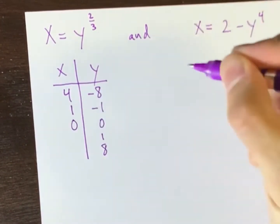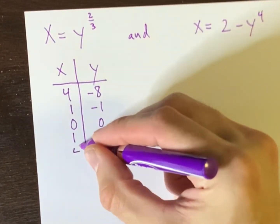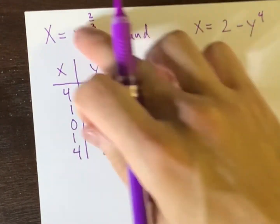Plug in zero, it's zero. Plug in one, one. Plug in eight, and you should get back four. And you know, you could extend this table if you'd like.